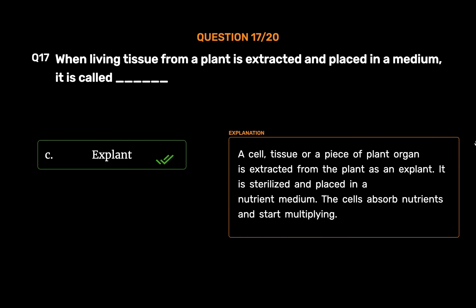A cell, tissue or a piece of plant organ is extracted from the plant as an explant. It is sterilized and placed in a nutrient medium. The cells absorb nutrients and start multiplying.